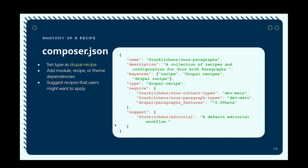The composer.json file looks a lot like what you're used to with Drupal modules and other projects — name, description, keywords, type. The type critically now needs to be 'drupal-recipe'. You can specify different kinds of dependencies, as well as the ability to suggest other recipes or projects that might further extend the capabilities.